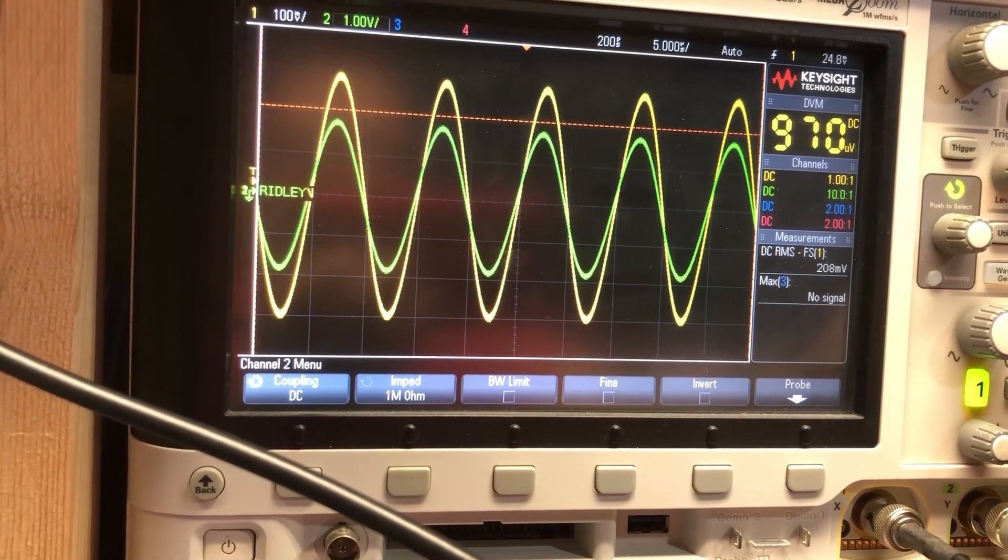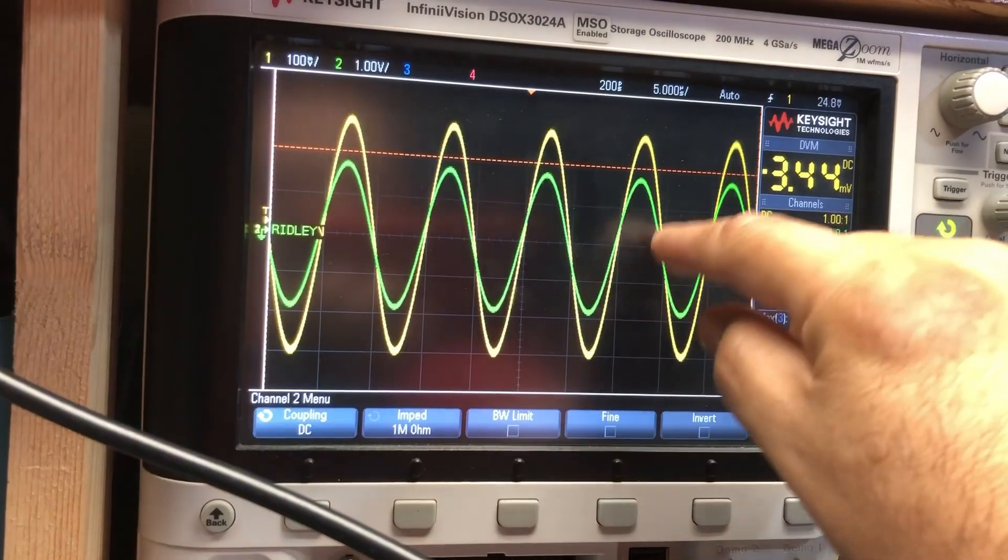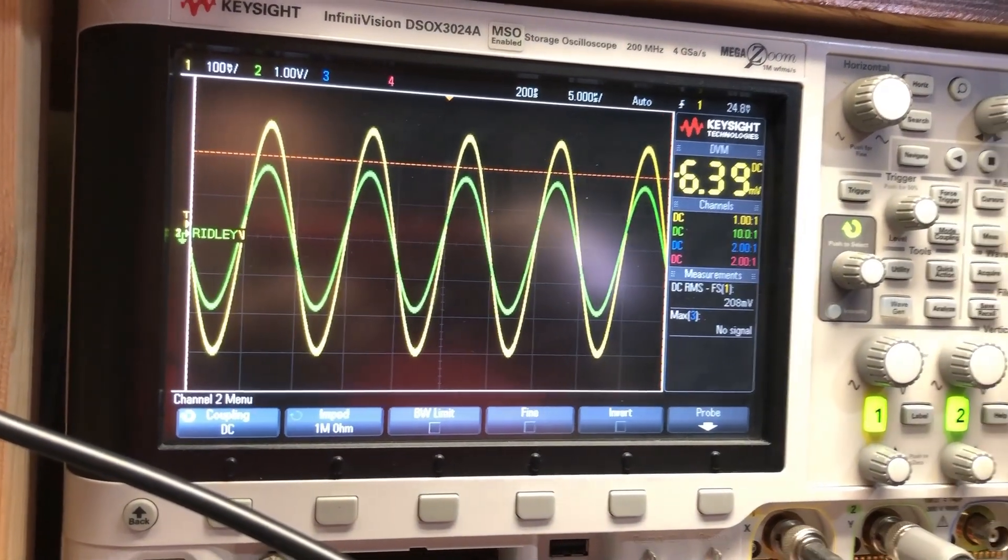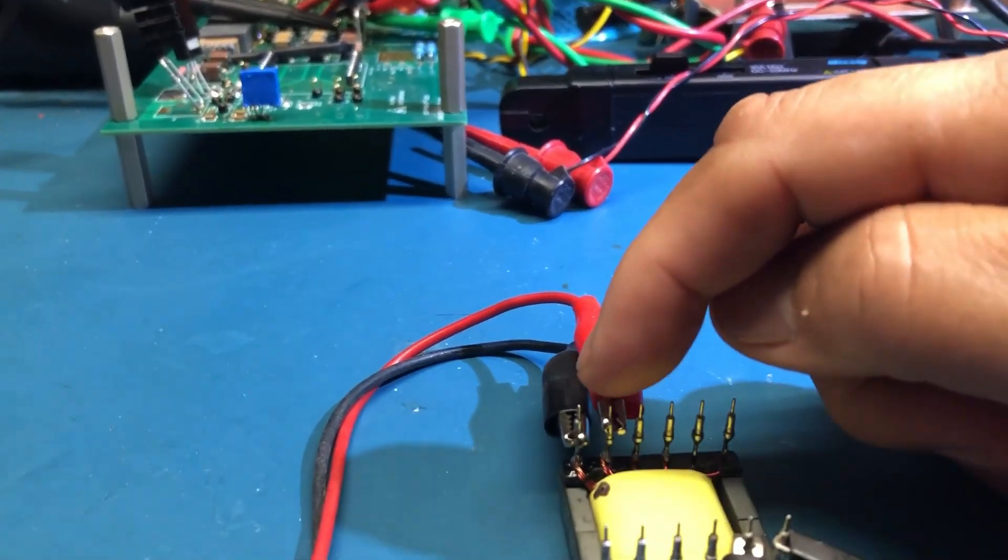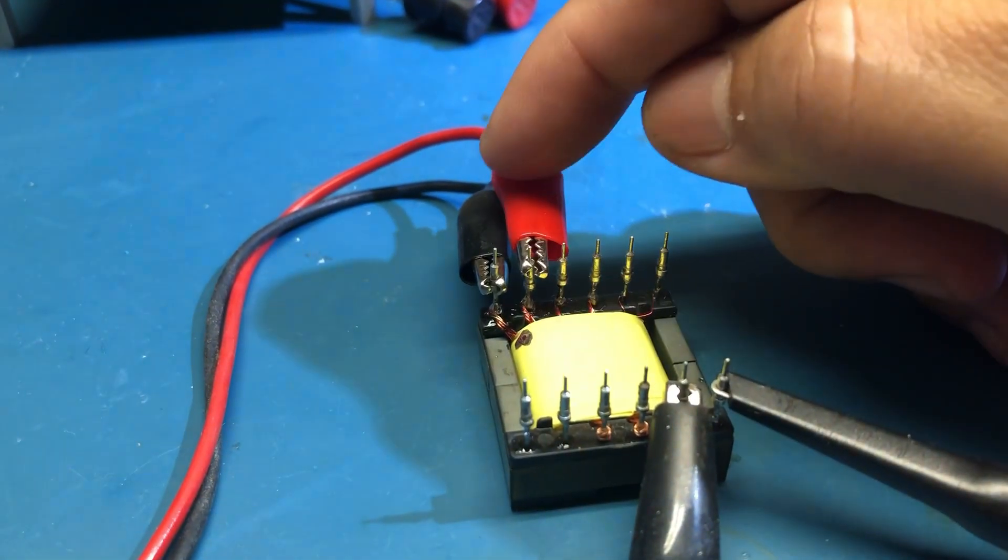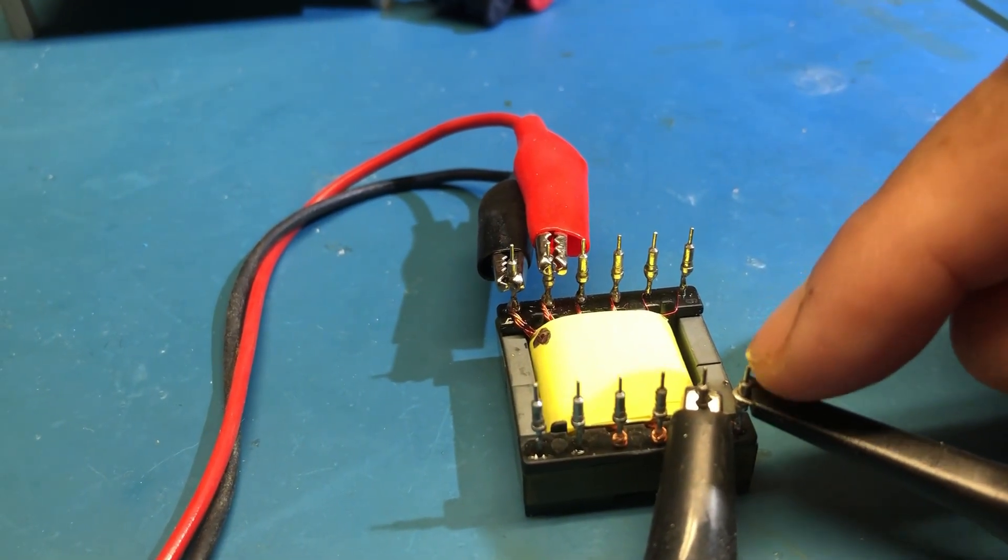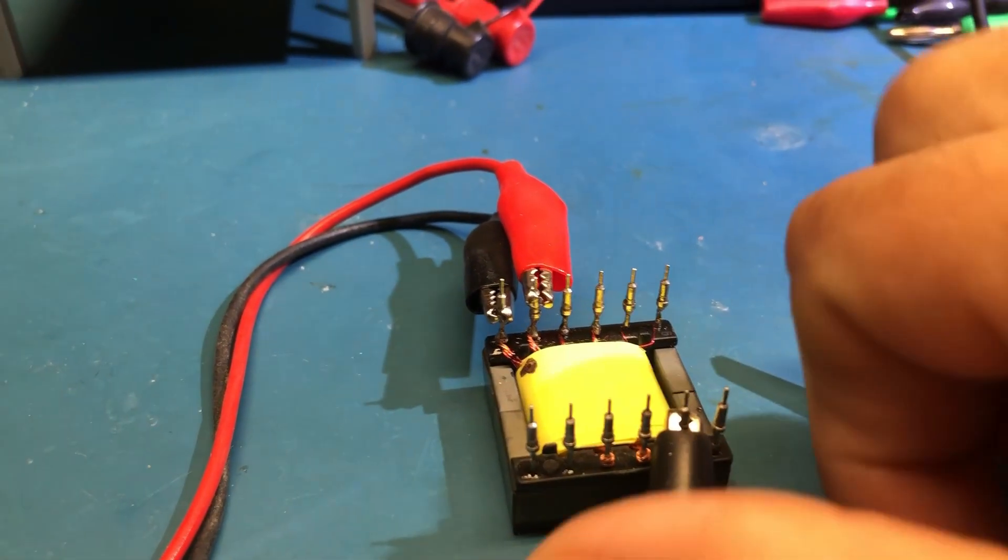Once we have it connected, we can go ahead and connect channel 2 and you can tell they're in phase with each other. That means that this is the dotted, the positive and the positive probe is a dotted. So what happens if we reverse that?